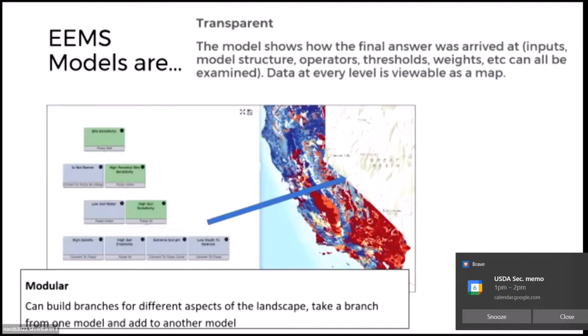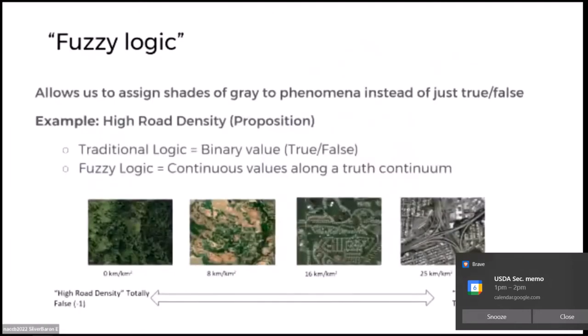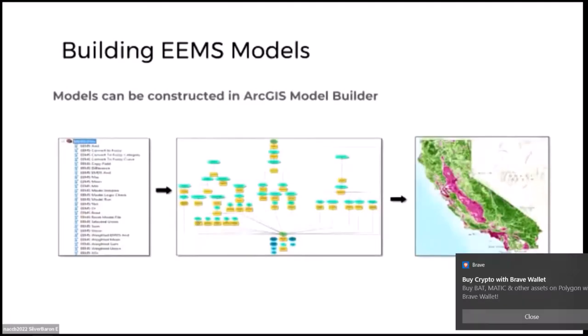EAMS is also modular — you can build each branch on its own and transfer one branch from one project to another or one region to another. It's built on the concept of fuzzy logic and especially fuzzy sets, which is the idea that when looking at nature and ecology it's not a black-and-white world. There are gradients. In this example we have a gradient of road density, so you can have continuous functions and incorporate them into your logic.